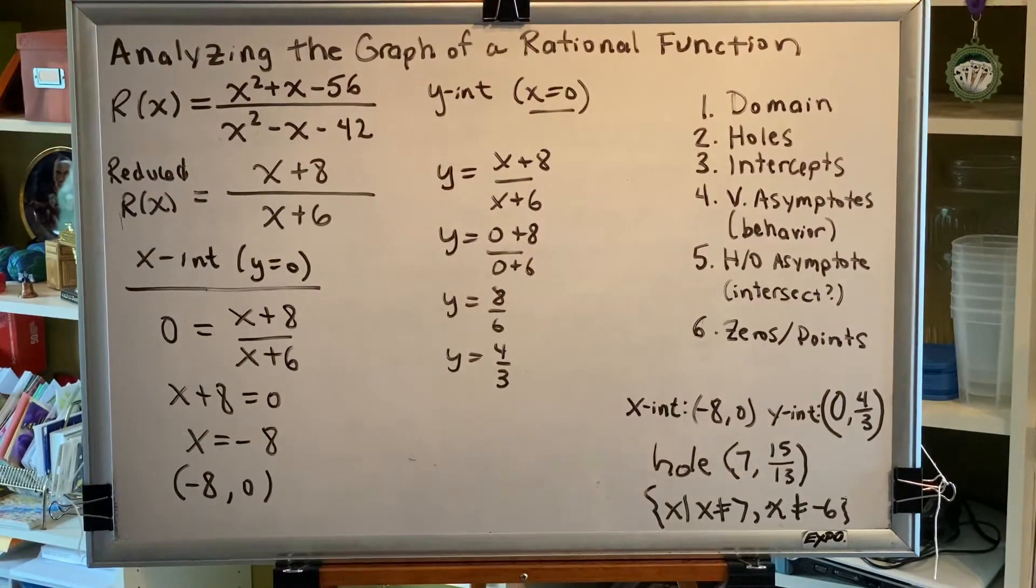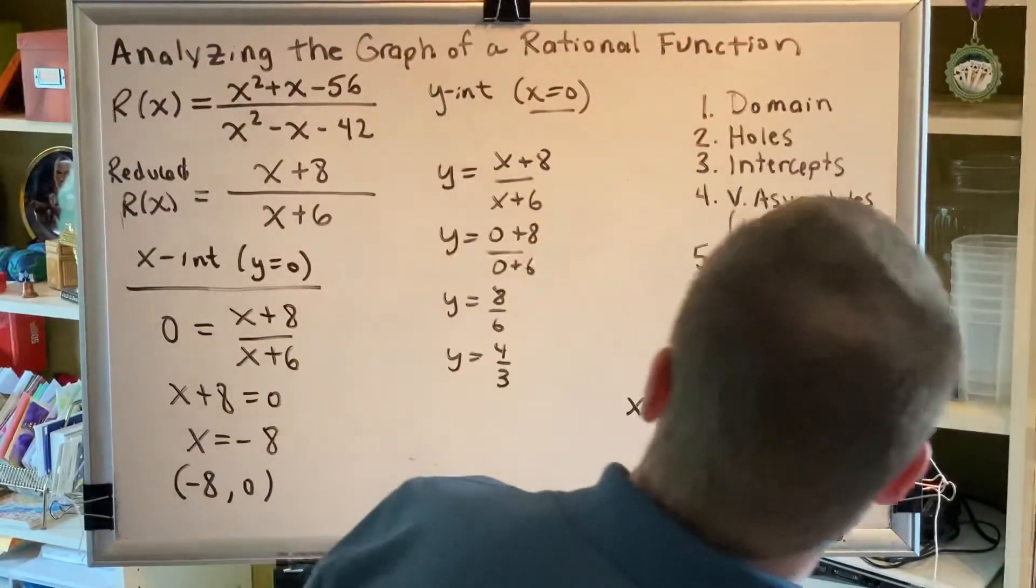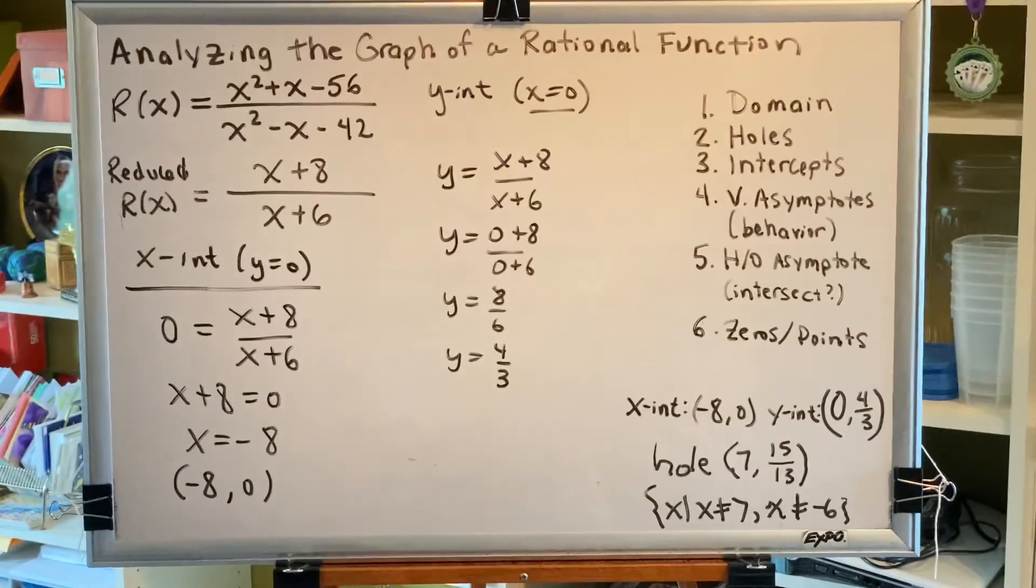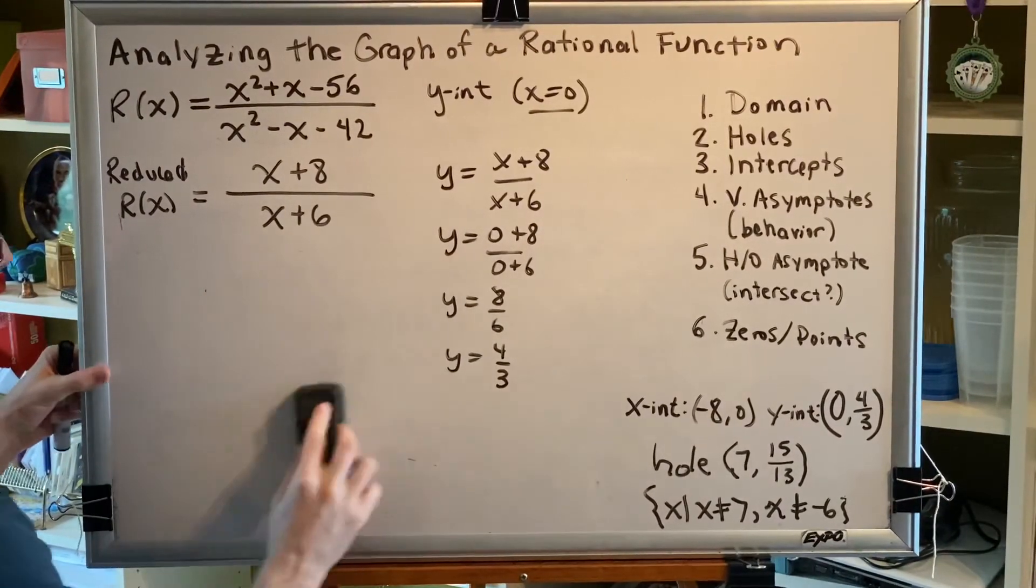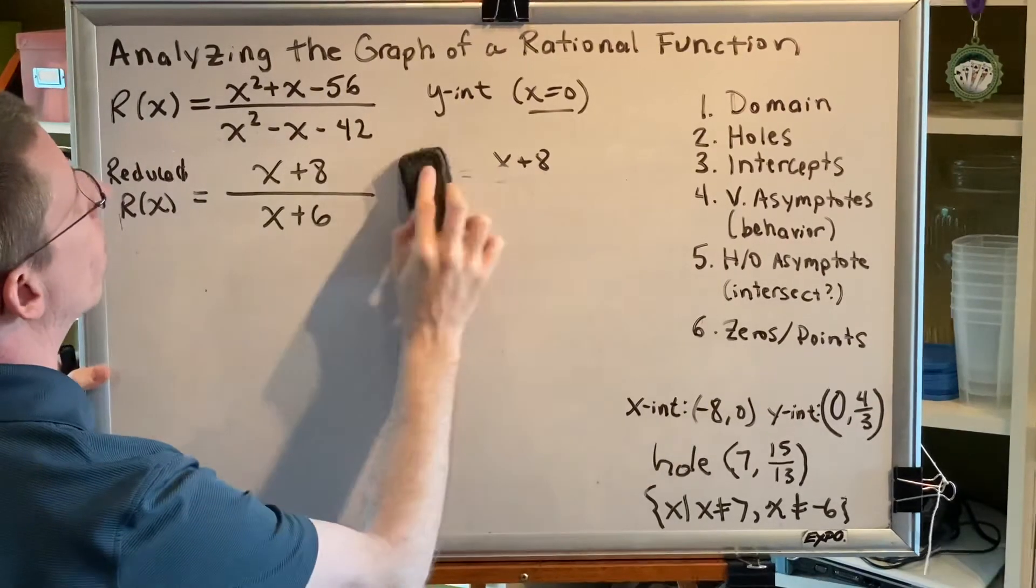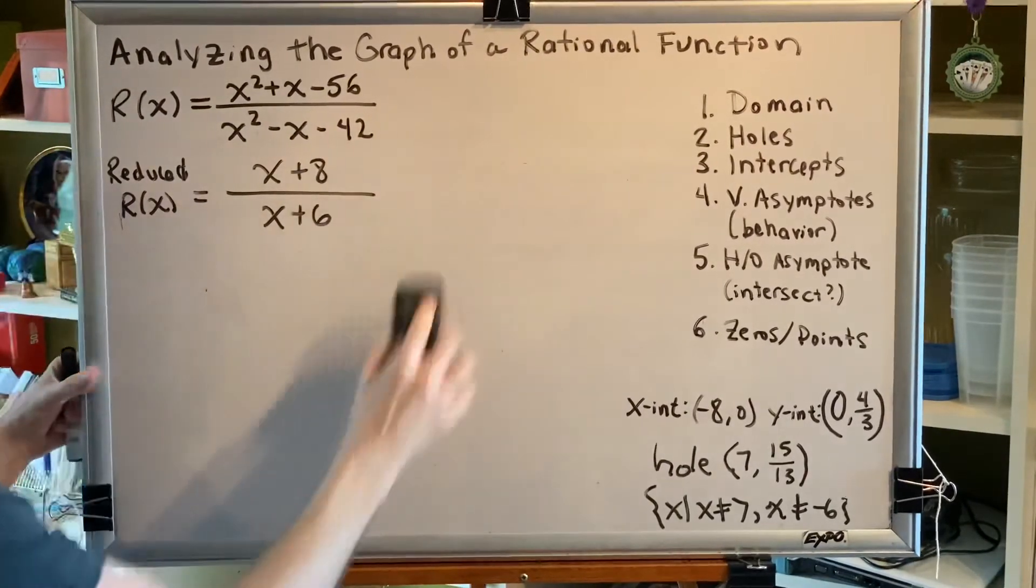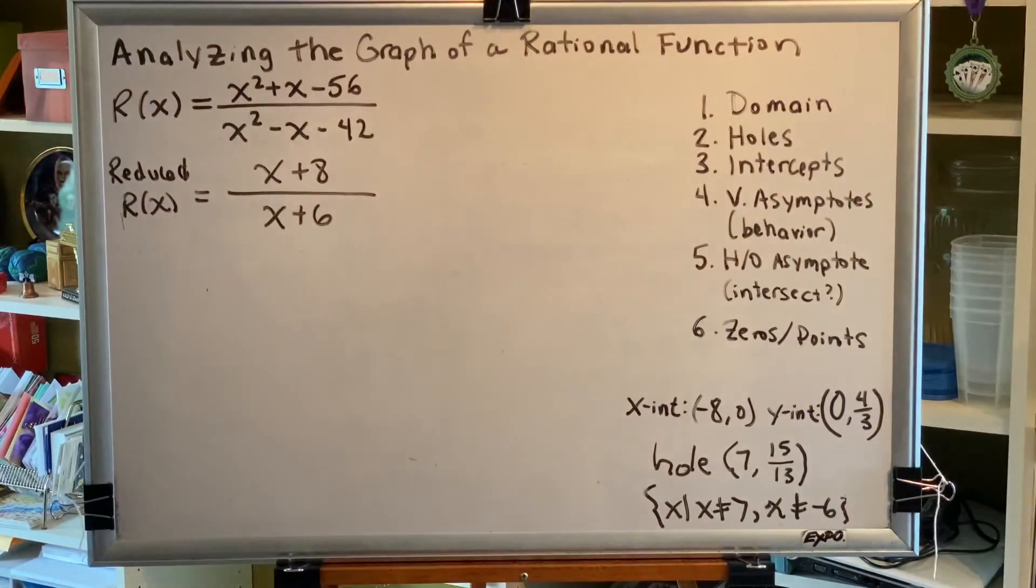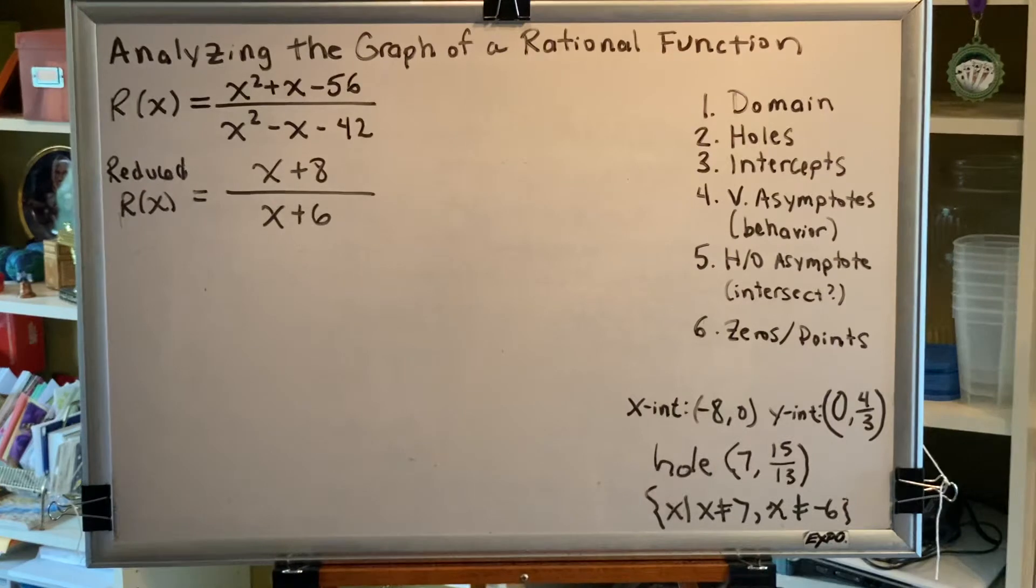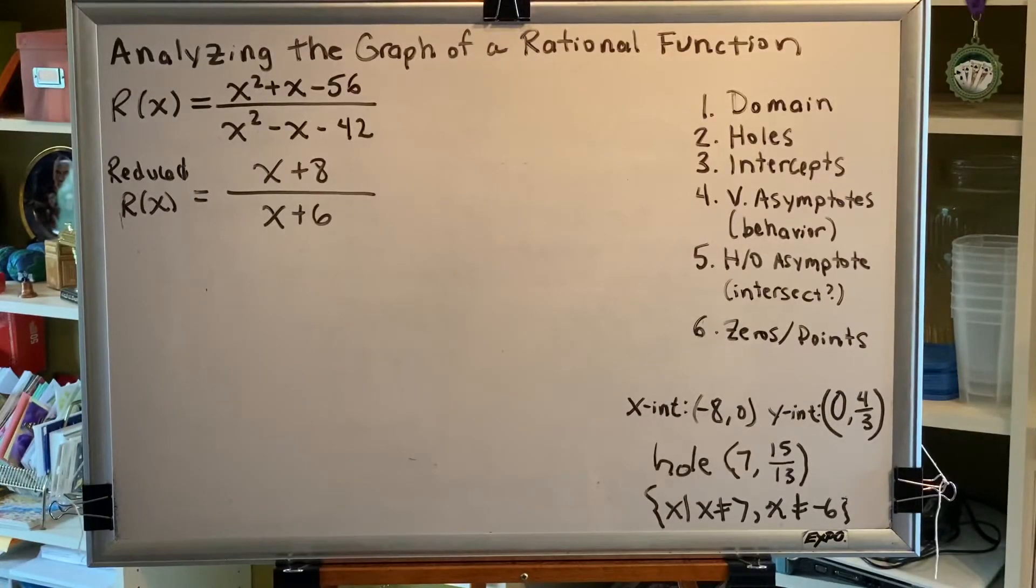Now we'll move on to step 4, vertical asymptotes and their behavior. Let's remind ourselves how step 4 works. Using the reduced r, find the vertical asymptotes. Graph each vertical asymptote using a dashed line. Determine the behavior of the graph of r on either side of each vertical asymptote.